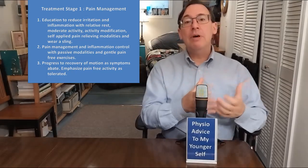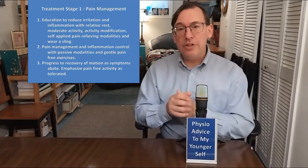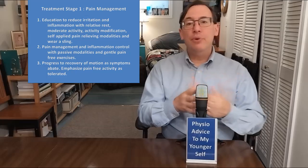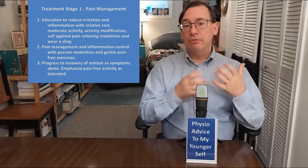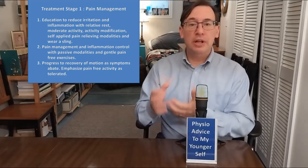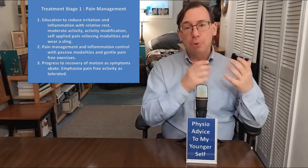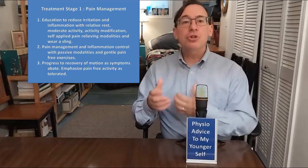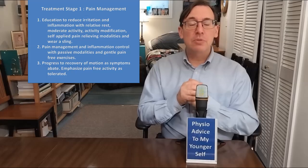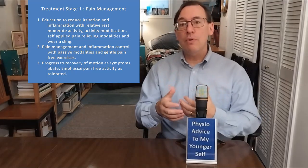Number two, pain management. This is the dis-inflammation. This is pain control. Passive modalities belong here. Gentle pain-free exercises. For example, for a painful shoulder patient, this can be grip squeezes and pronation supination and elbow active range of motion and neck range of motion. You're working around the problem. Number three, progress to recovery of motion as symptoms reduce, as symptoms abate. Encourage pain-free activity as tolerated. Use the hand and arm as much as comfortable. This should not be painful.